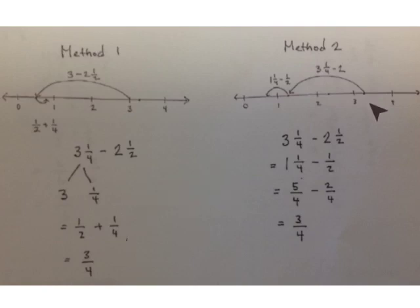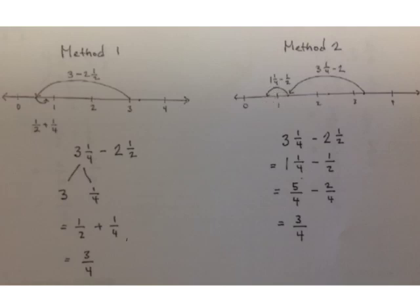Our other method: start at 3 and 1 fourth and take away the whole number 2 first. 3 and 1 fourth take away 2 is 1 and 1 fourth. Then we take away 1 half. 1 and 1 fourth is the same as 5 fourths — that's 4 fourths plus 1 more fourth. 5 fourths take away 2 fourths is 3 fourths.